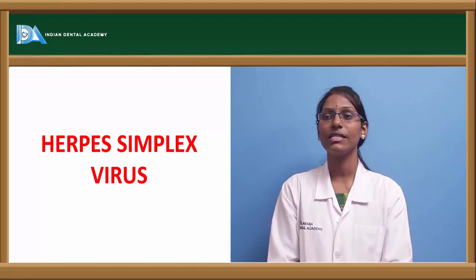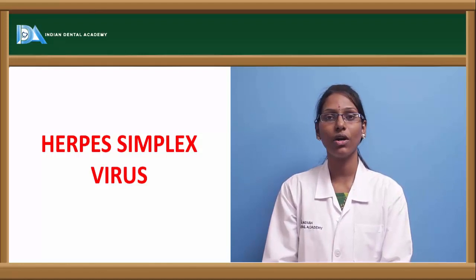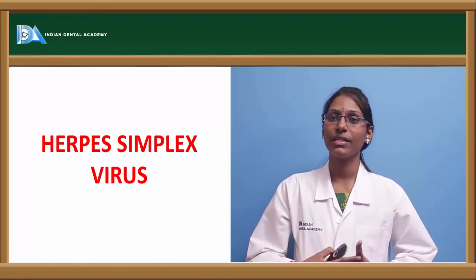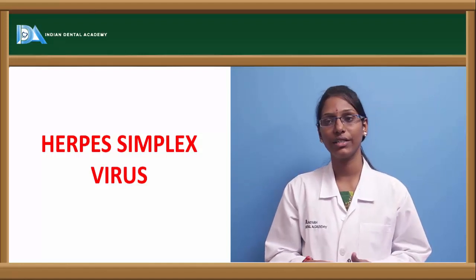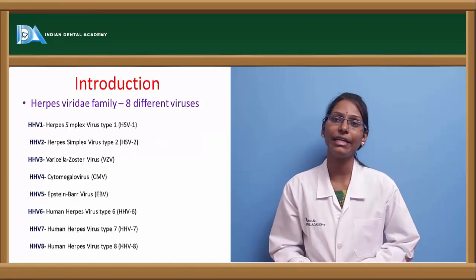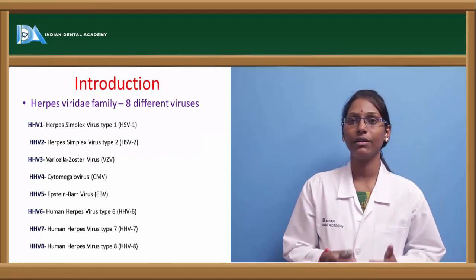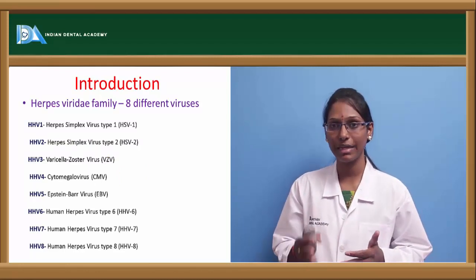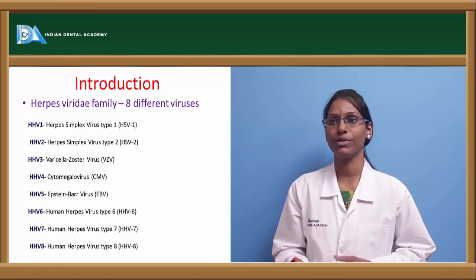The next topic for discussion is herpes simplex virus. HSV is one of the common causes of recurrent mucocutaneous lesions occurring in the head and neck region, trunk, and genital region. It is one of eight viruses of the Herpesviridae family, where HSV1 and HSV2 belong to the human herpesvirus 1 and human herpesvirus 2 groups.